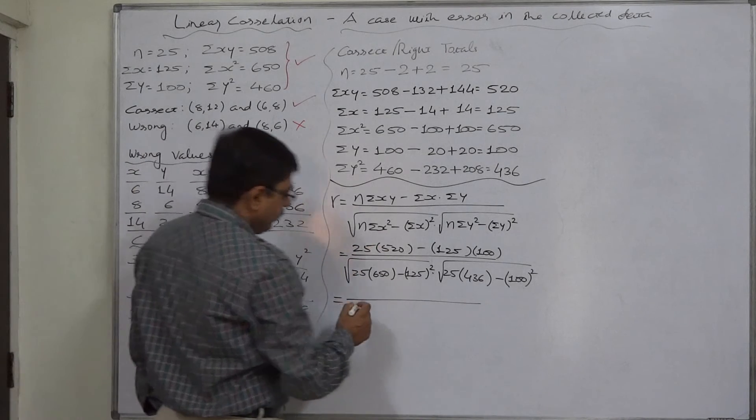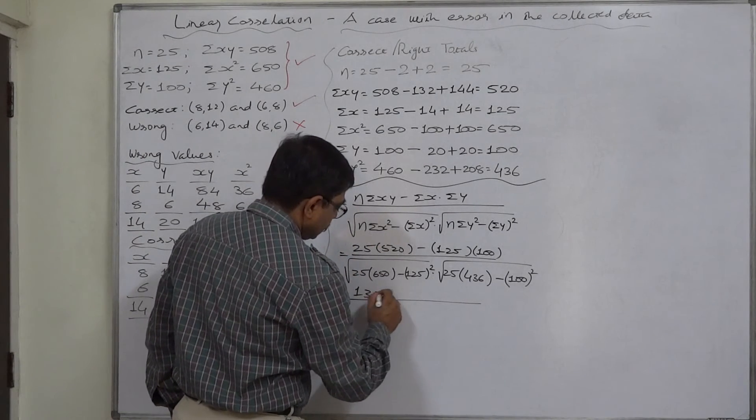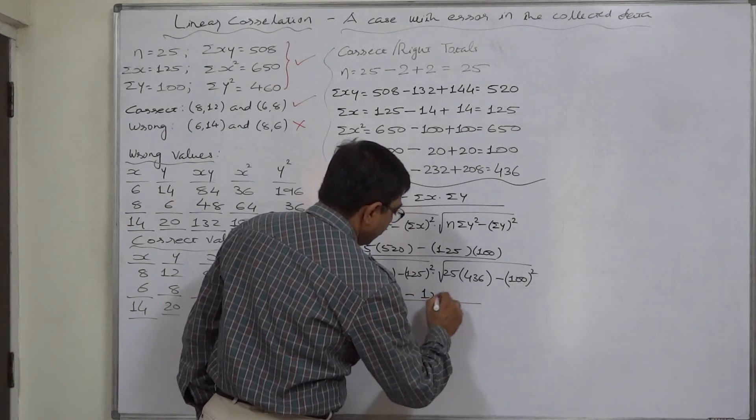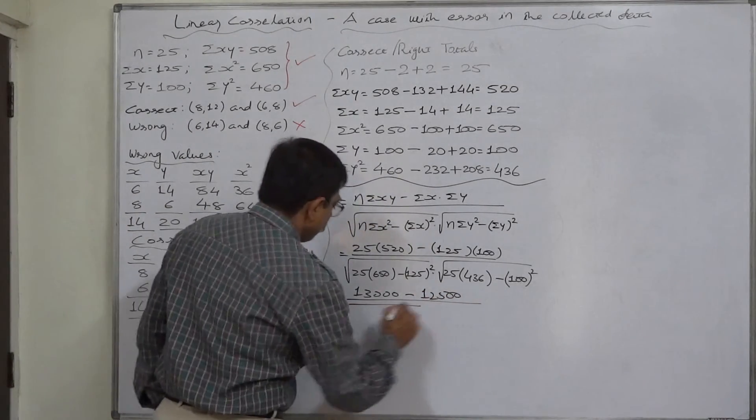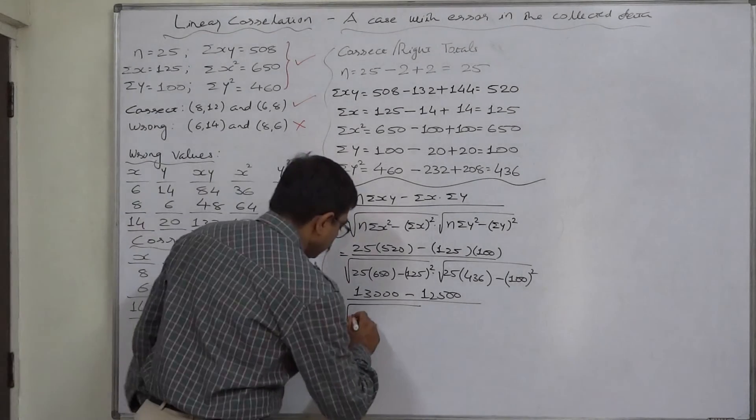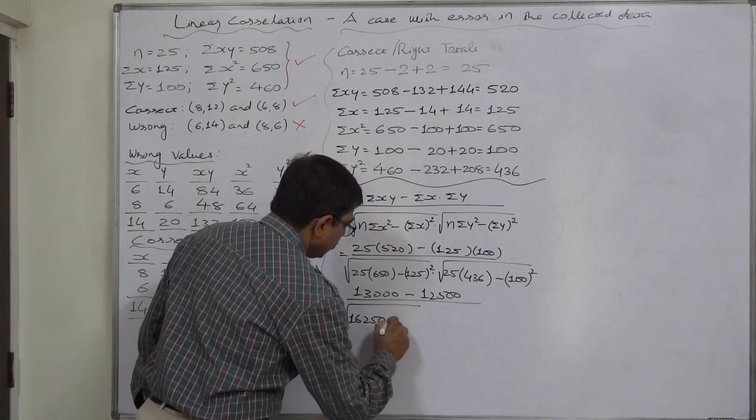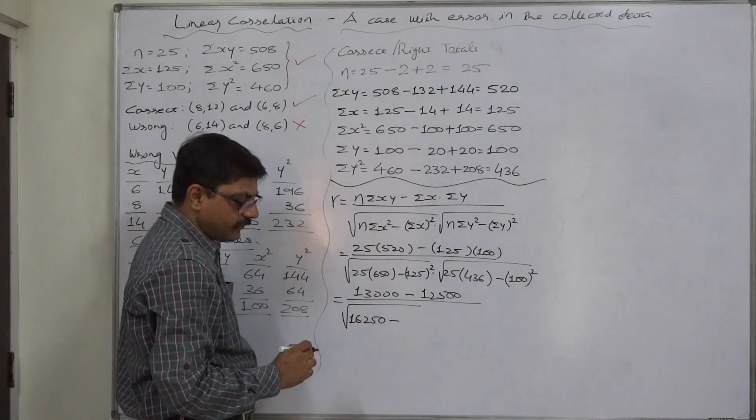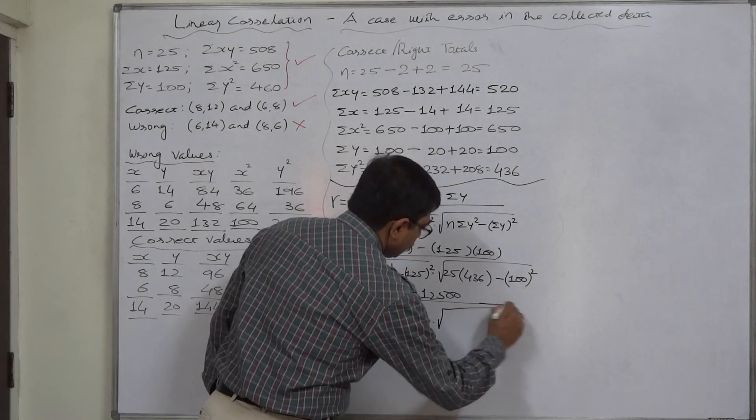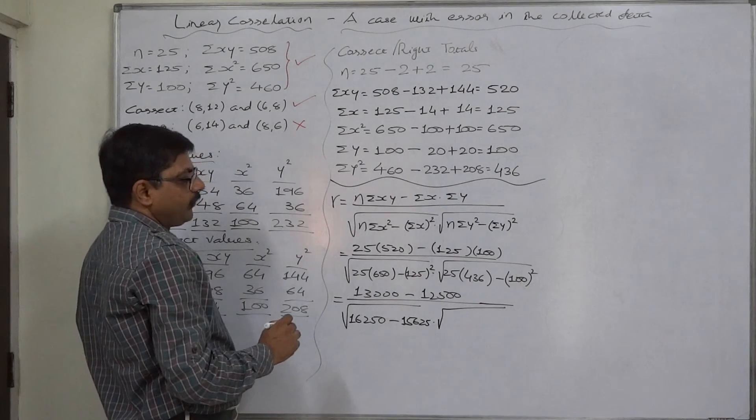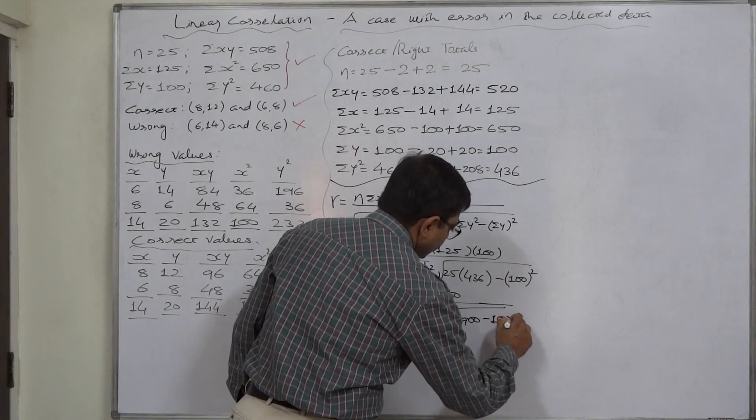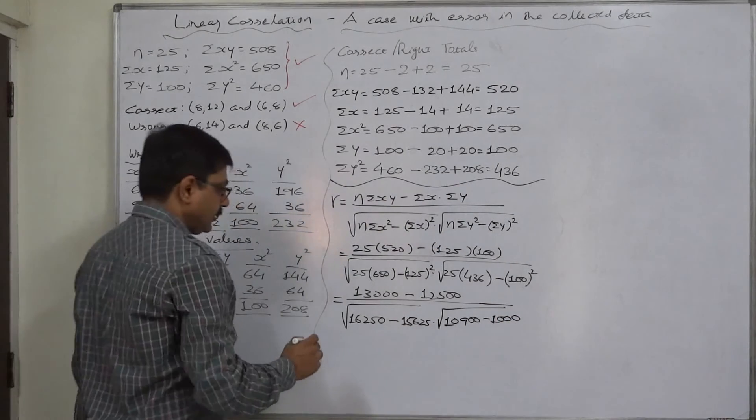25 into 520 will be 13,000. 125 into 100 will be 12,500 upon under root. 25 into 650 will be 16,250. The square of 125 will be 15,625. Into under root 25 into 436 will give us 10,900. Minus square of 100 is 10,000.